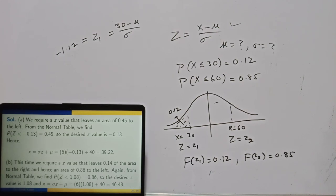Today we have covered important definitions related to continuous random variables. We learned two important distributions: the uniform distribution, which is simple but very useful, and the normal or Gaussian distribution. In the next lecture, we will continue this discussion.